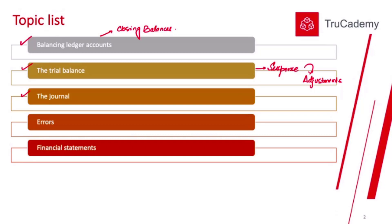Next, the journal — what it is and why we use it. The journal serves multiple purposes: it is a day book for transactions not recorded elsewhere, and it is also used to record adjustments for errors. We will also look at which errors are revealed by the trial balance, which are not, and finally, how to prepare the financial statements.